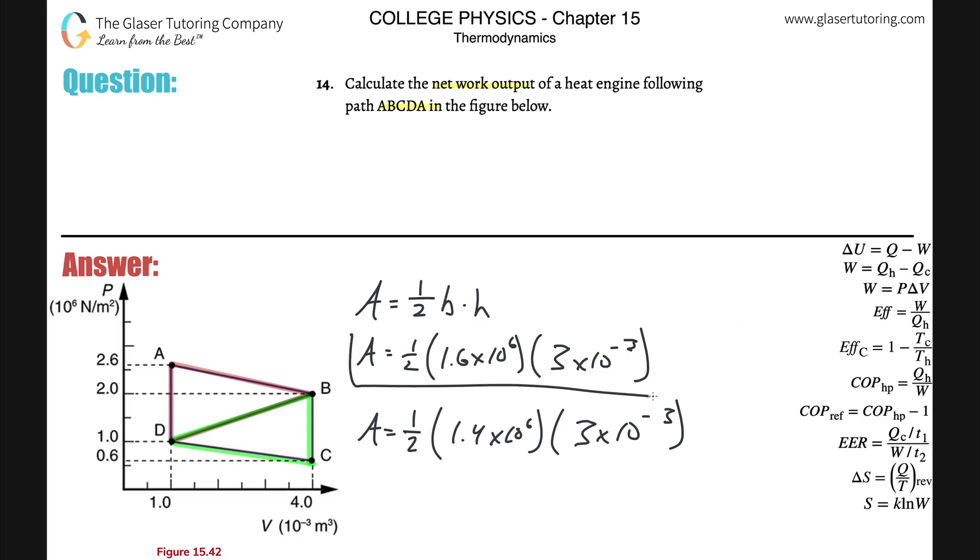And now all you simply have to do is take this area and add this area to it, and you're good to go. That would represent the total area and therefore the net work. So let's do that. So it's one half times 1.6 times 10 to the sixth times three times 10 to the minus third plus 0.5 times 1.4 times 10 to the sixth times three times 10 to the minus three. So the area here, which is the network output, is going to be 4.50.